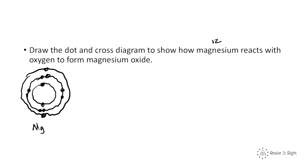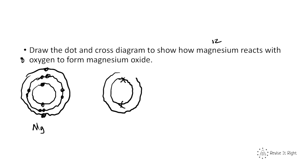Then we find oxygen, which has 8 electrons. We draw that out — this time represented as crosses. So 2 in the inner shell and 6 in the outer shell: 1, 2, 3, 4, 5, 6. And that is oxygen.